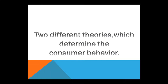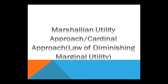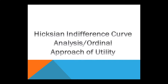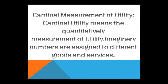Consumer behavior is explained by two different theories. The first is the Marshallian utility approach, or the cardinal utility approach, which is about measuring utility — for example, through diminishing marginal utility. The second is the Hicksian indifference curve analysis, or the ordinal approach of utility, which is about ranking. Let's look at cardinal measurement of utility.